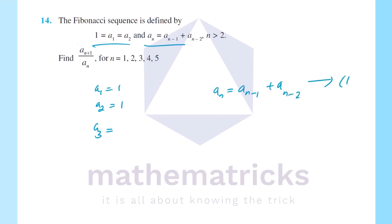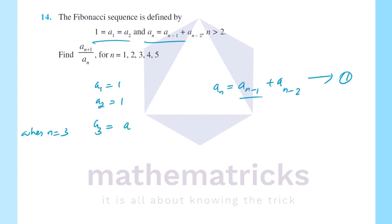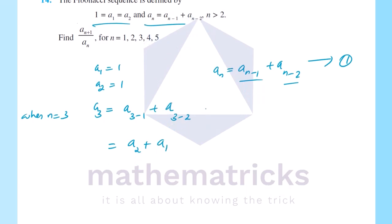We will substitute n equal to 3. We have a3 equal to a_{n-1} plus a_{n-2}, that is 3 minus 1 plus a_{3-2}. That is equal to a2 plus a1, which gives us a2 plus a1 equal to 1 plus 1 equal to 2. So a3 equals 2.